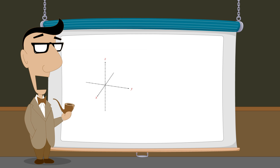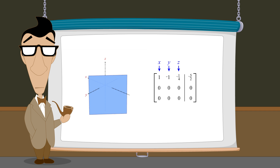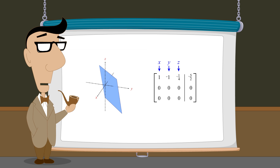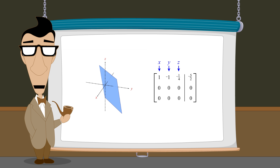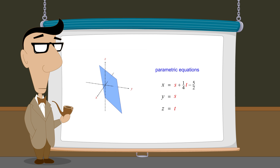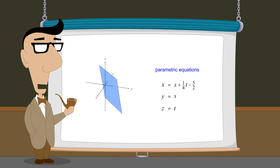The system of equations in the second example also contained three variables, so the graph of this system also required three dimensions. However, the solution set of this system formed a two-dimensional plane. The parametric representation of the solution set therefore required two parameters, which we called s and t. As s and t each independently vary from negative infinity to positive infinity, each unique combination of values produces a unique set of values for x, y, and z. Each set of values is one solution of the system, corresponding to one point on the plane.